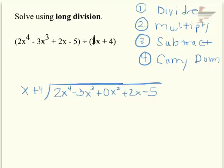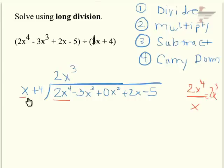You're always dividing your first terms only, so I take 2x to the fourth divided by x, and that is 2x cubed — that goes up top. Then the multiply step is to multiply 2x cubed times the entire divisor: 2x cubed times x is 2x to the fourth, and 2x cubed times 4 is 8x cubed.